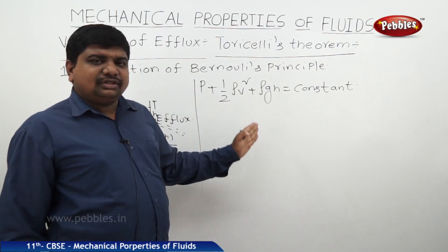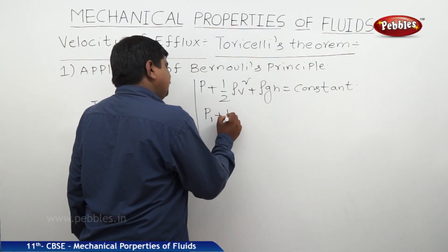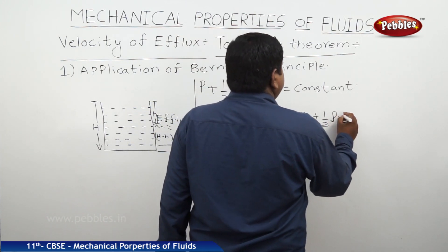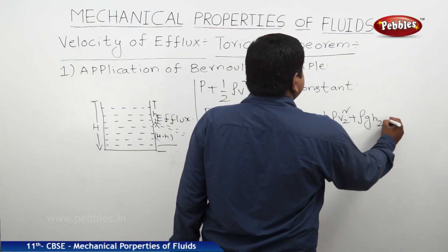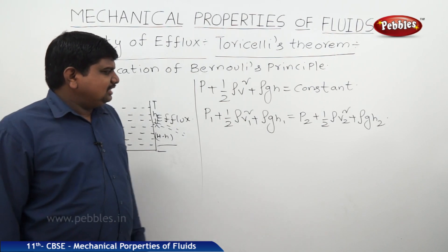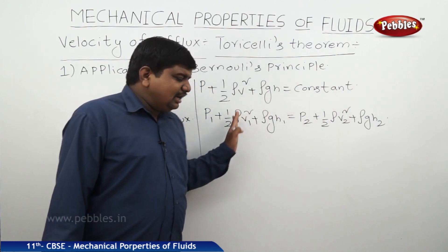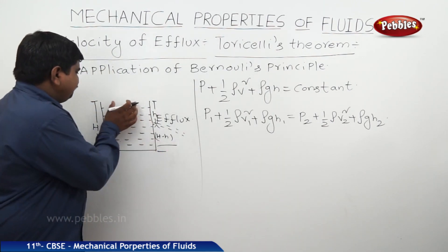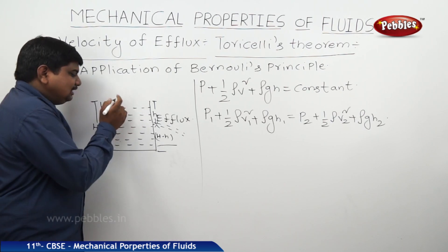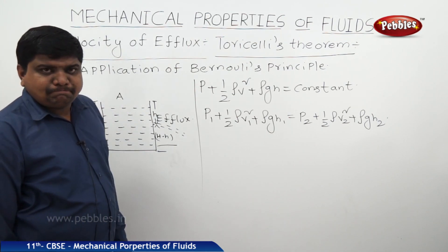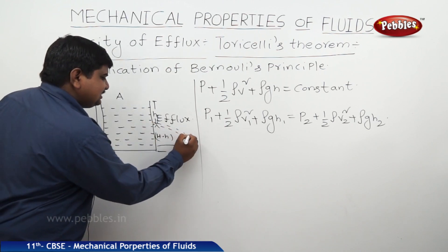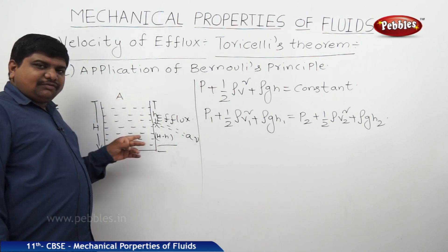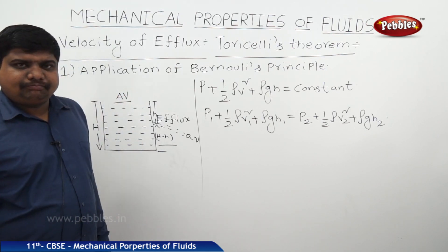Considering Bernoulli's equation applied between point 1 and point 2, the equation will be balanced accordingly. We should substitute H1, H2, V1 and V2 values — all remaining quantities are equal throughout the efflux. The area of cross-section of the top surface of the container is capital A; the area of the hole is small a. Through small a, water moves with velocity small v, and from the top surface it moves with velocity capital V-dash.